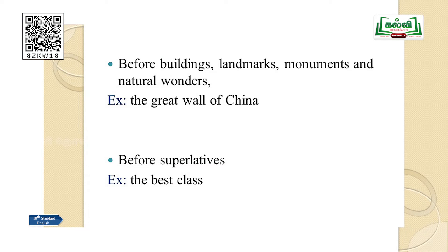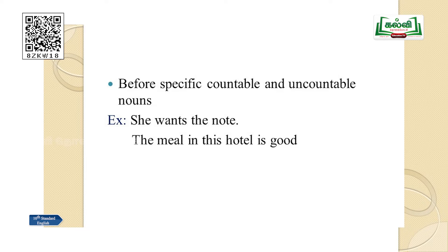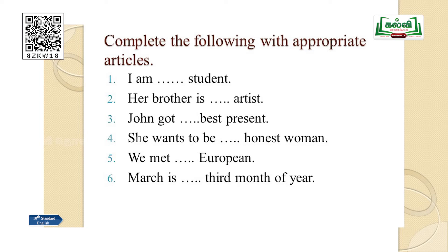We also use 'the' before buildings, landmarks, monuments, and natural wonders — for example, 'the Great Wall of China'. Before superlatives — 'the best class', 'the tallest of all'; when we have a superlative, it must be preceded by 'the'. And before specific countable and uncountable nouns — 'she wants the note' means that particular note; 'the meal in this hotel is good' refers to that specific meal. When we use 'the', it clearly shows we are being very specific and particular.